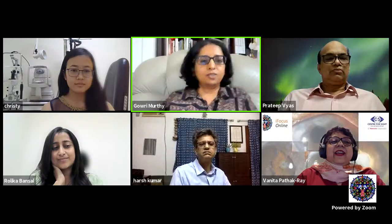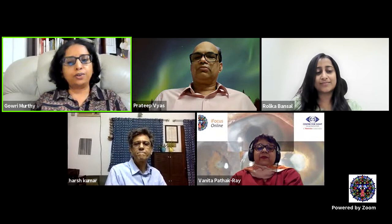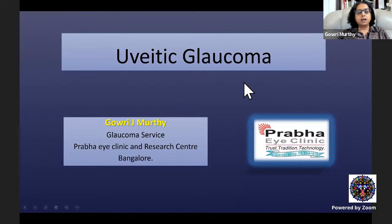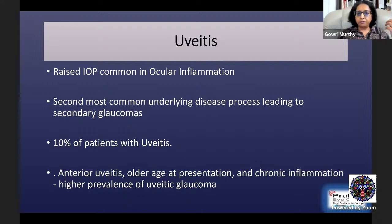Thanks for that generous introduction. The topic given to me today is glaucoma associated with ocular inflammation. When we say glaucoma is associated with inflammation, most of the time it is uveitic glaucoma, apart from a very small subset associated with scleritis and other things. I'm going to concentrate mainly upon uveitic glaucoma. Uveitis has a definite incidence of raised intraocular pressure, and uveitis is the second most common underlying disease process leading to secondary glaucomas.